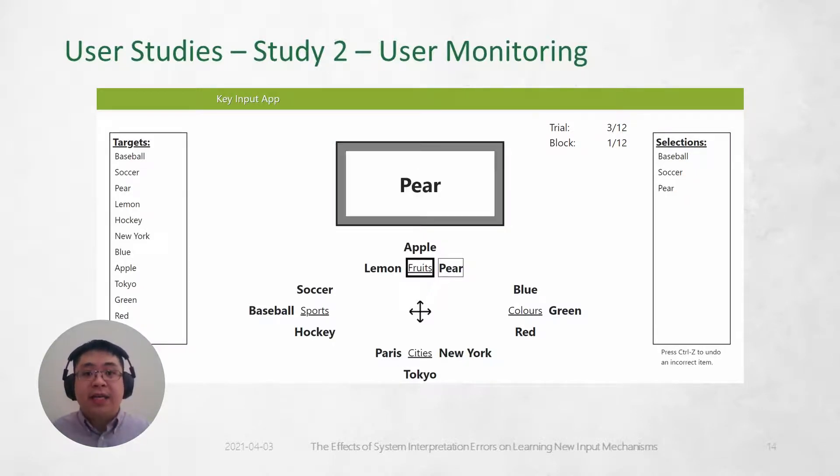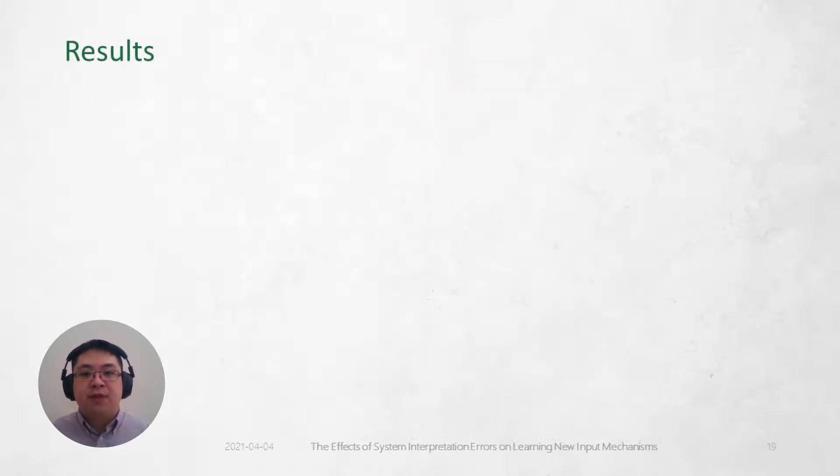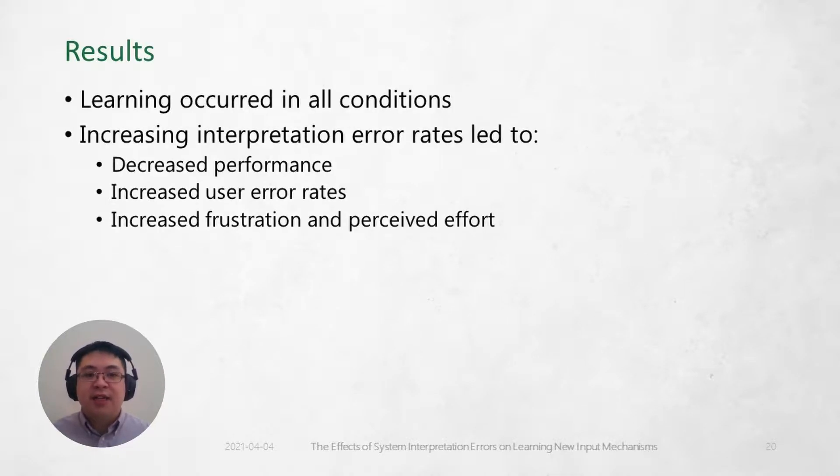We gathered data from a total of 150 participants throughout both studies and in three interpretation error rate conditions. We found that learning had occurred in all conditions of both studies, including the ones that had artificial interpretation errors.